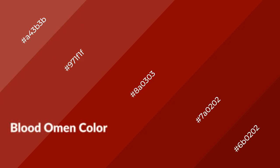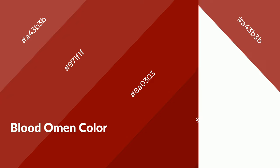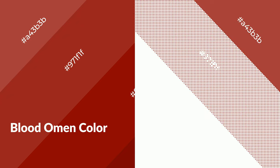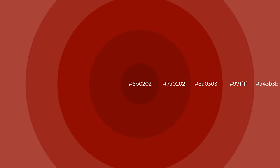Blood omen is a warm color and it emits cozier and active emotions. Warm colors are symbols of warmth, fire, heat, and sunshine. It also evokes joy, passion, love, and even anger. You can see them used in restaurants and gyms.